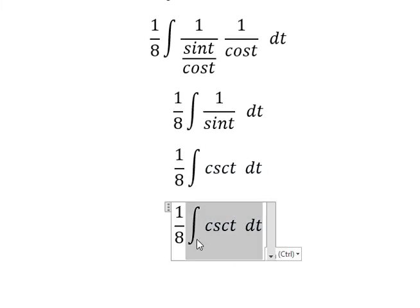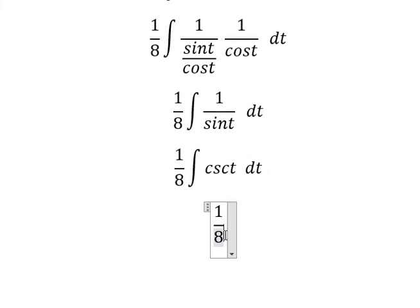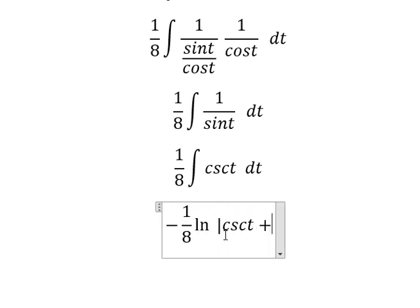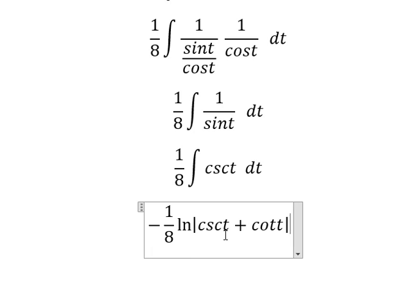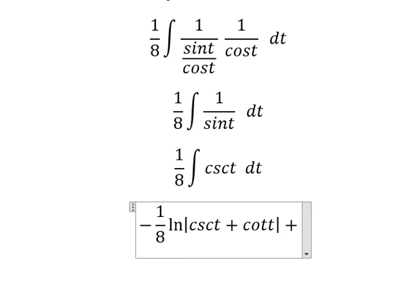The integration of this one. Now, we have negative ln of the absolute value of cosecant t plus cotangent t. And then we put c.